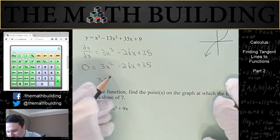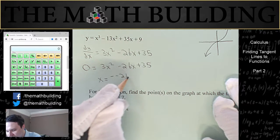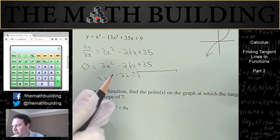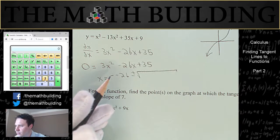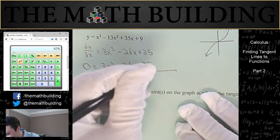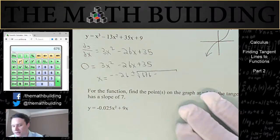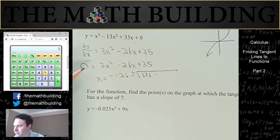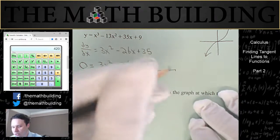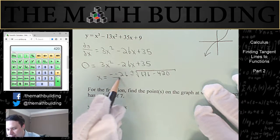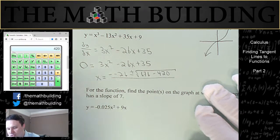So x equals negative b, which is negative, negative 26, plus or minus the square root of b squared, which I'm going to calculate now, which is 676, minus 4 times a times c, which would be 4 times 3 times 35, which is 420, all divided by 2a.